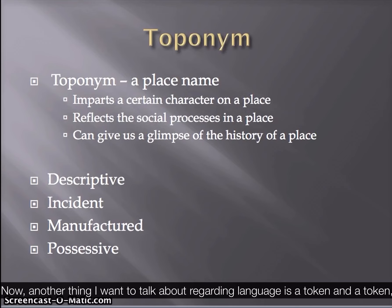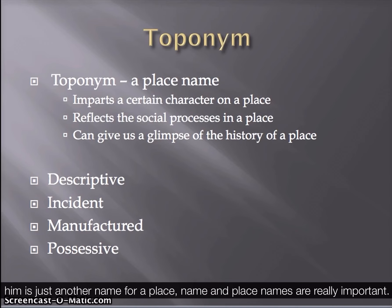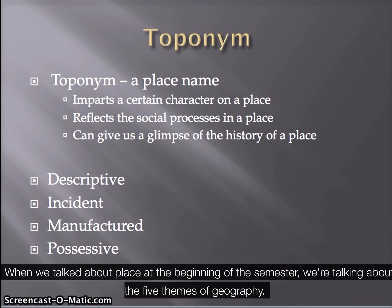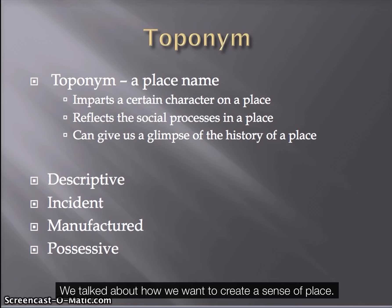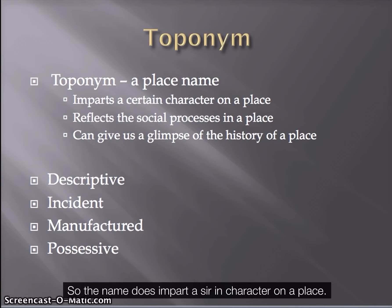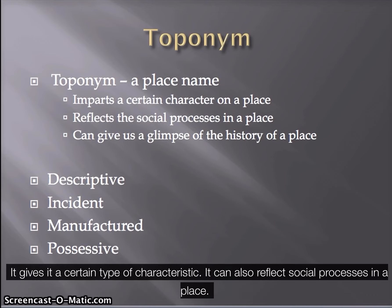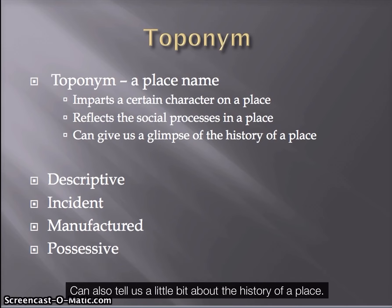Another thing to discuss regarding language is a toponym — which is just another name for a place name. Place names are really important. When we talked about place at the beginning of the semester and the five themes of geography, we discussed how we want to create a sense of place. One way to do that is through the name. A place name imparts a certain character, gives it specific characteristics, can reflect social processes, and can tell us about the history of a place.